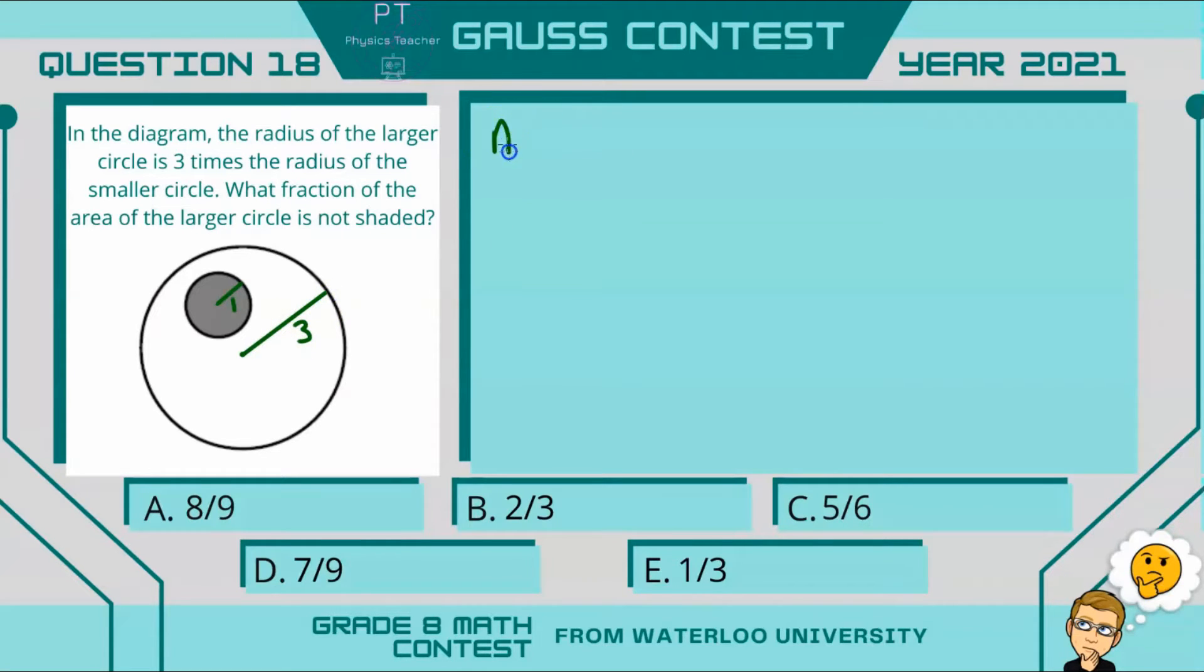Now the area of a circle is pi r squared. So the area of the small circle then will be pi times 1 squared, which is just pi. The area of the large circle will be pi times 3 squared. 3 squared is 9, so that's 9 pi.